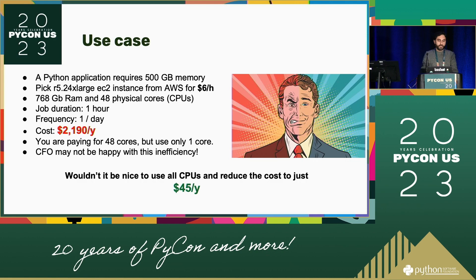Let's talk about one use case. Say you have an application that requires 500 GB of RAM. You pick an R5 running 4xlarge memory-optimized instance from AWS for about $6 per hour. It provides 760 GB RAM and also gives you 48 physical cores. Let's say this job takes about one hour on Python to run, and the frequency is once per day. If you do the math, this job alone will cost you around $2,200 per year. And normally in companies there's not just one job — there are thousands of jobs running. That's why companies are spending millions of dollars on AWS. AWS is happy, but maybe not your CFO.